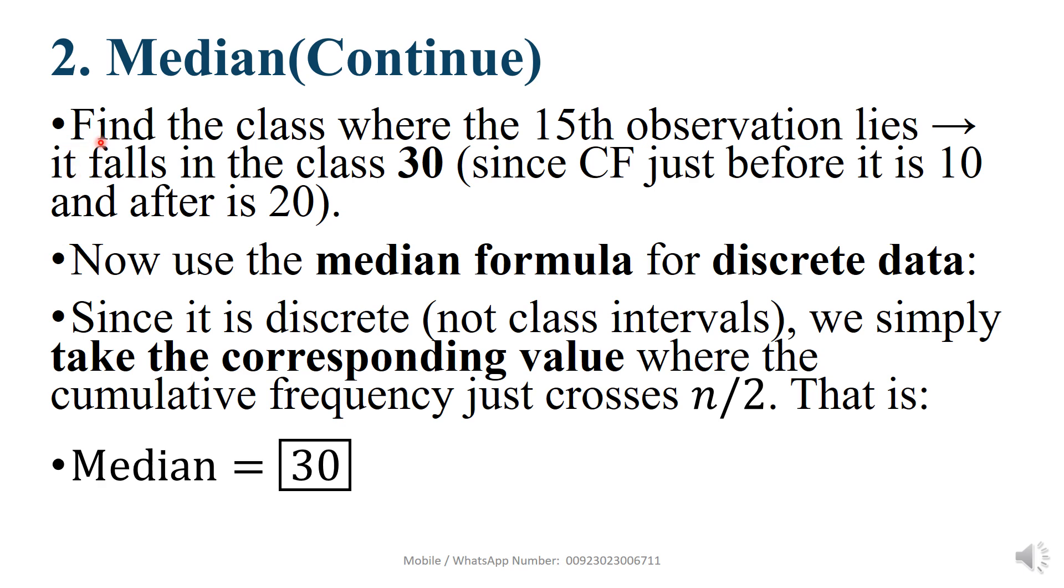Median continue. Find the class where the 15th observation lies. Since it falls in the class 30, since cf just before it is 10, 10 after is 20. Now, use the median formula for discrete data. Since it is discrete, not class intervals, we simply take the corresponding value where the cumulative frequency just crosses n divided by 2. That is, median equal to 30.